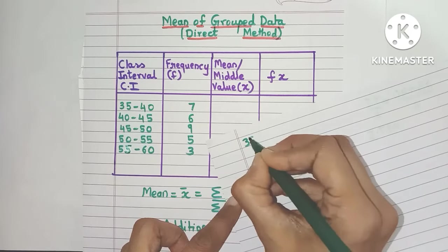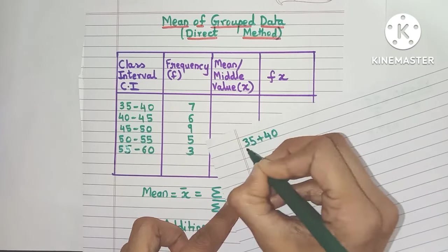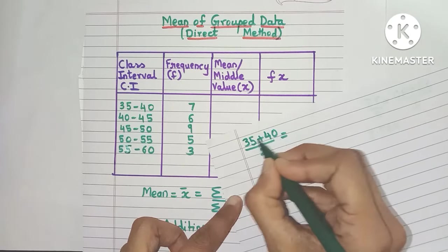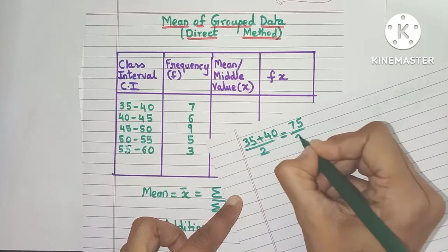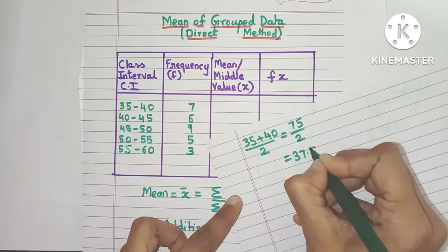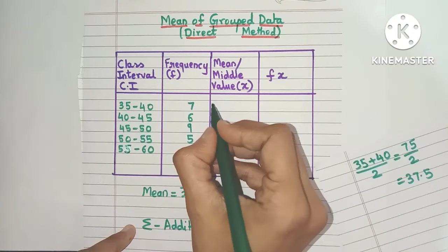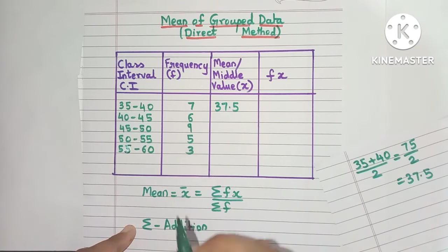For the first class interval, we have 35 plus 40 divided by 2. So 35 plus 40 is 75 divided by 2, which gives you 37.5, and this is your x value for the first class interval.